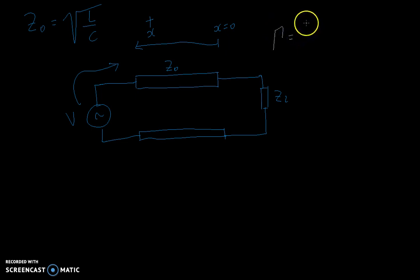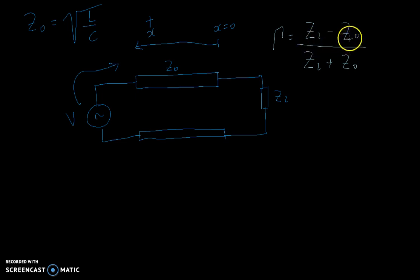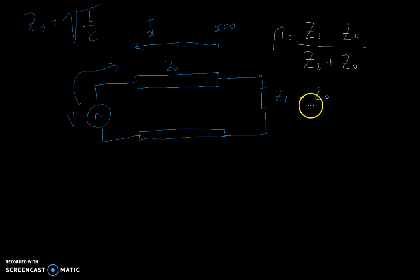The formula for gamma is equal to ZL minus Z0 divided by ZL plus Z0. As you can see, if ZL is zero the result is minus one. If ZL is infinity the result is plus one. And if ZL is equal to Z0, then gamma is zero and you have no reflection at all.